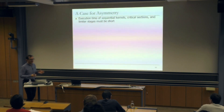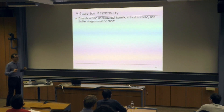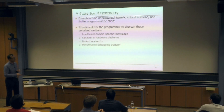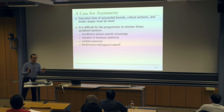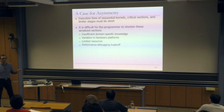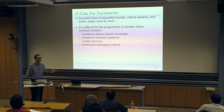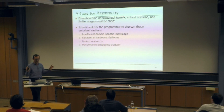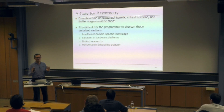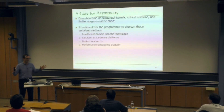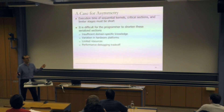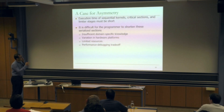The case for asymmetry: you have sequential parts of a program — sequential bottleneck, critical sections, or limiter stages — and they must be short for high scalability and high performance. You could say this is the programmer's problem, not the system designer's, but that's not a good approach. Remember the Cell processor — they said coherence is the programmer's problem — and that made the system very difficult to program. If only a small fraction of programmers can program a system, it may not be as useful as it could be.